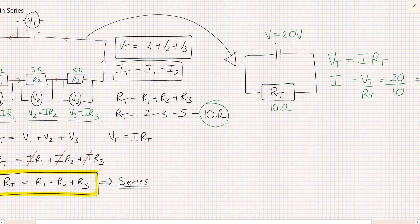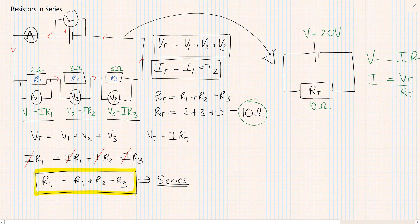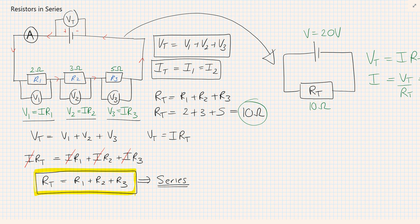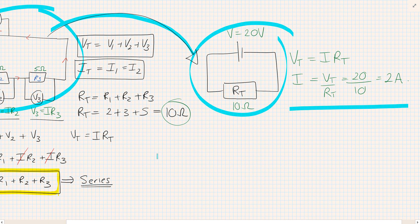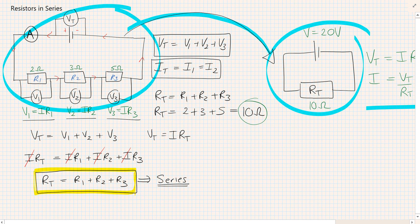So that technique of working out the total resistance is really handy when you want to take a complex circuit and turn it into a really simple circuit. From there you can calculate things like current and voltage really easily.